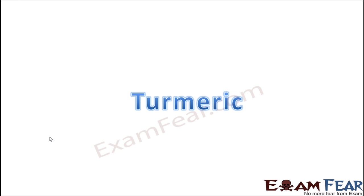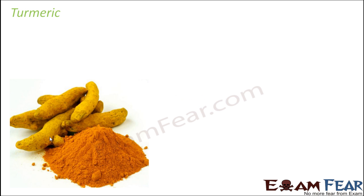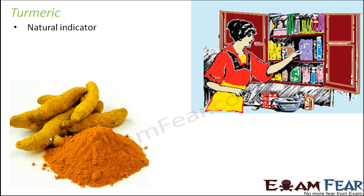Let us look at the next naturally occurring indicator, that is turmeric. Turmeric is a very common thing which is often used in preparing food, something you often find in your kitchen, and it acts as a natural indicator. The solid turmeric looks somewhat like ginger but is yellow in color, and in the powdered form it looks like this. It is a very common ingredient for a lot of food items.